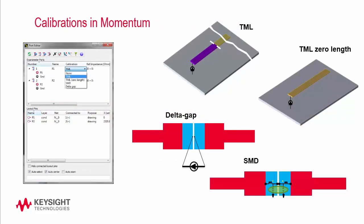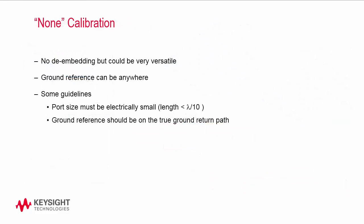We have discussed how each calibration scheme comes with its own assumptions and conditions regarding the calibration structure. You should carefully consider these assumptions and conditions, then choose an appropriate calibration technique for your designs. It all depends on what type of component is eventually attached to the port. What if none of the calibrations work for the structure that you built? This is when you can consider the fifth option, which is none — that is, to do no calibration at all. The non-calibrated port can be very versatile as long as it is used properly. The ground reference can be anywhere in the design. However, some guidelines are: make sure the port sizes are electrically small, and make sure the ground reference is on the true ground return path.